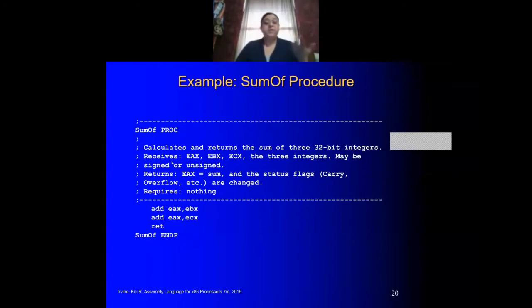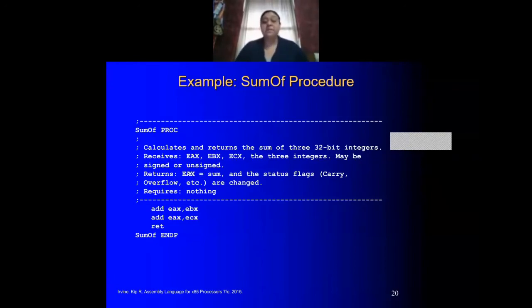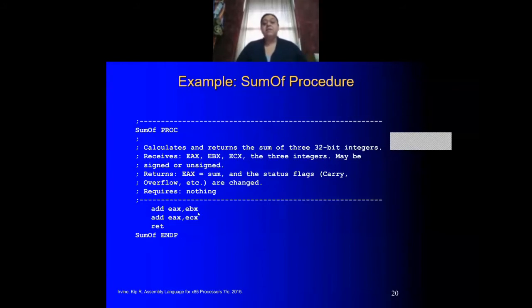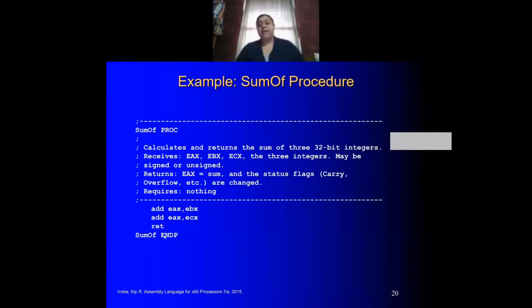This procedure is very simple. Notice that by default it's receiving the following three registers: EAX, EBX, and ECX. And it will return EAX, which will hold the sum of all the items. It doesn't require anything in particular — all it does is add the three registers. And because the last one used that holds all the information is EAX, it's returning that. It ends with SUM-OFF followed by the ENDP directive.